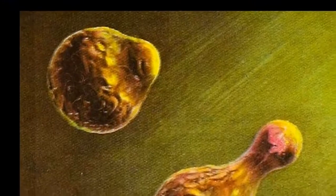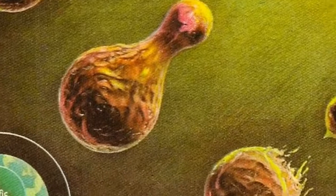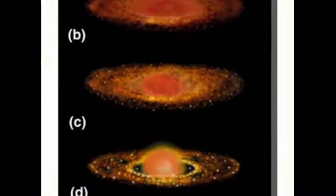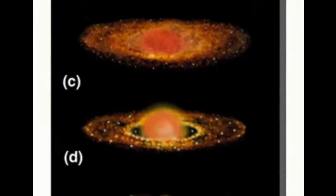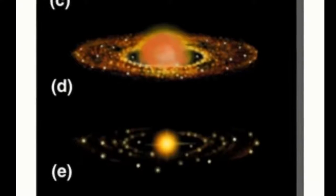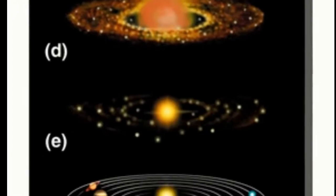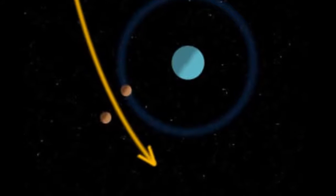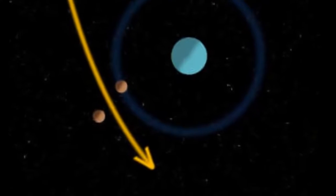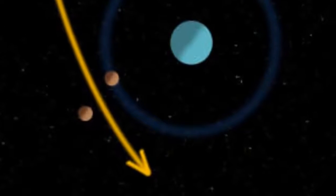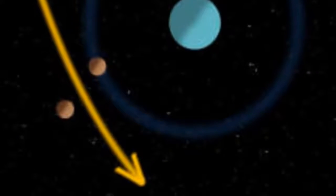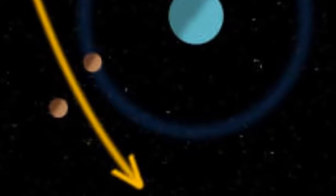The fission theory suggests the moon was once part of the earth and somehow separated from our planet in its early history. The condensation theory suggests the moon and earth condensed together from the original nebula that formed the solar system. The capture theory states the moon was formed not in the vicinity of the earth but in a different part of the solar system and was later captured by the earth.